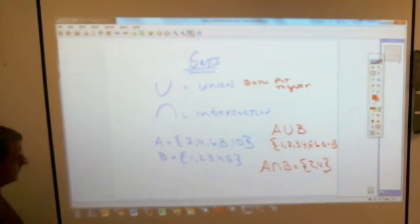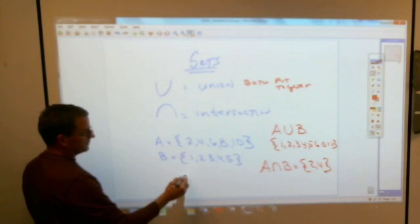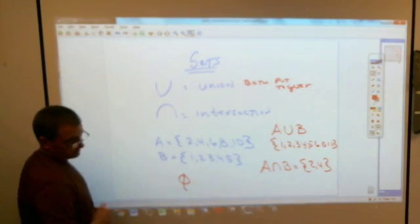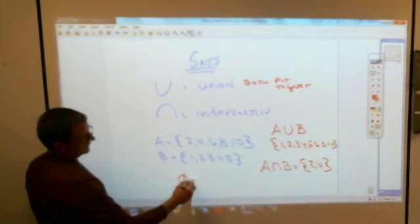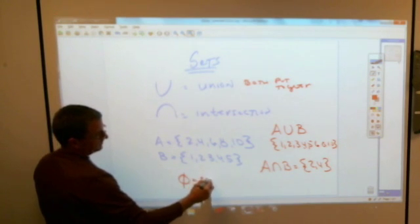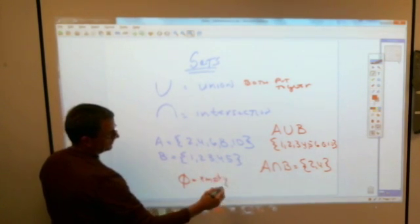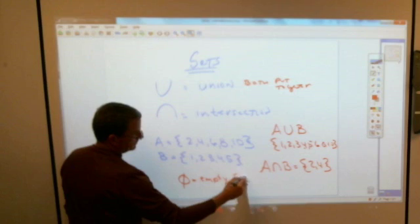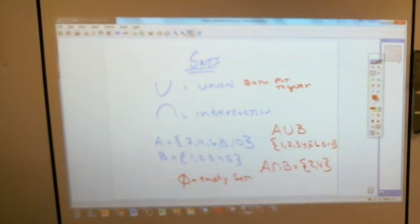They also give you this little thing. If you ever see this little zero with a slash through it, that's called an empty set, which means there's no members in it. If I asked you to give me the set of all the days of the week that end with the letter X, it would be an empty set because there are no days of the week that end with the letter X. Isn't that a very good example?